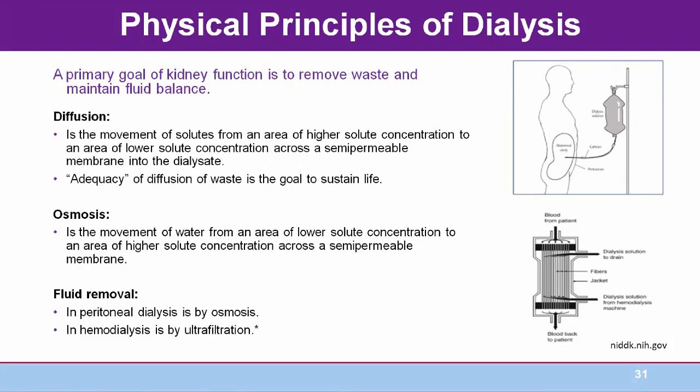Let's review the physical principles of dialysis for both hemo and peritoneal dialysis. The two major principles are diffusion and osmosis. Diffusion is the movement of solutes from an area of higher solute concentration to an area of lower solute concentration. Diffusion of waste across the semipermeable membrane into the dialysate is the primary mechanism of waste removal in both hemo and peritoneal dialysis. The amount of diffusion needed to prevent uremia and sustain quality of life is termed adequacy of dialysis.